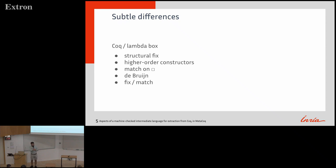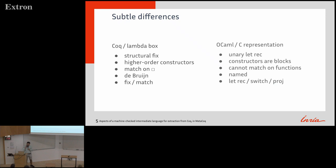In LambdaBox, you can match on a box, because in Coq you can match on a proof. If you erase the proof, a box remains, and you have a rule to match on a box to make everything work. Everything is implemented using de Bruijn indices, and the construct that complements the structural fix is a match with patterns.